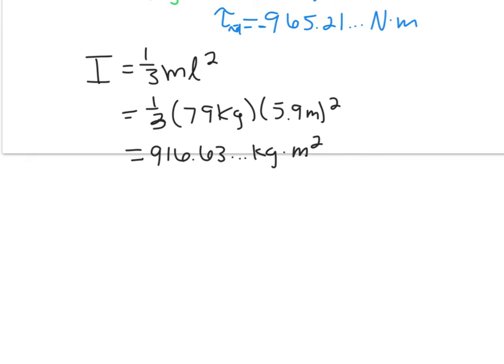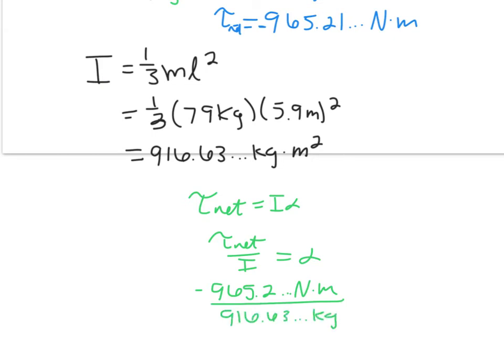So now looking for angular acceleration, we know that net torque equals I alpha. Net torque over I equals alpha. So 965.2 keeps on going newton meters divided by 916.63 keeps on going kilograms equals alpha. And we'll get, out of room 1.05, this is negative, keeps on going radians per second squared. And again, negative because this is getting faster in the clockwise direction. So my angular acceleration is about equal to negative 1.1 radians per second squared.